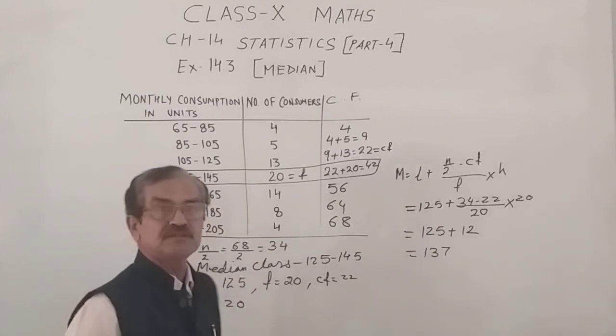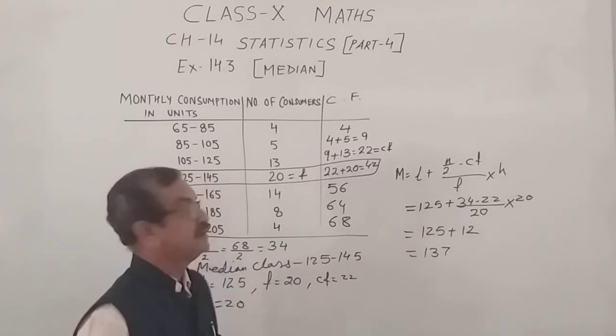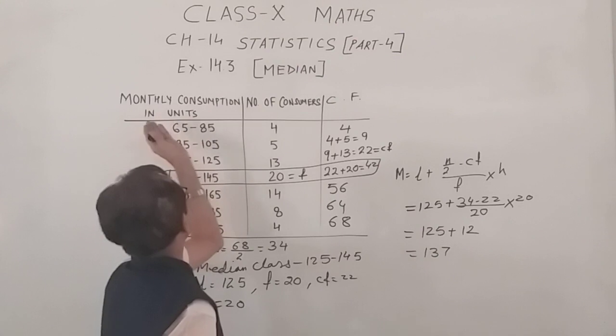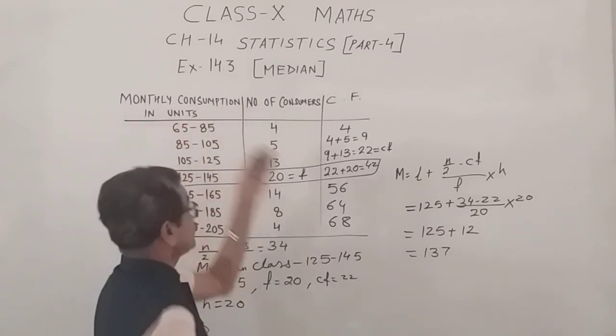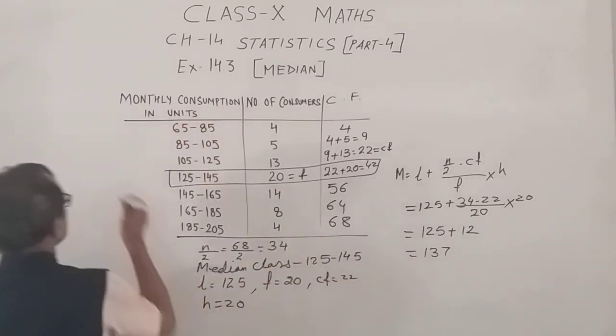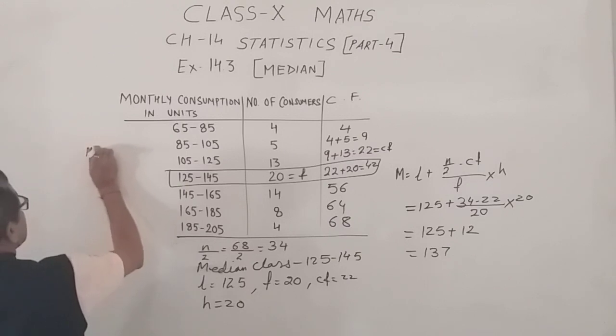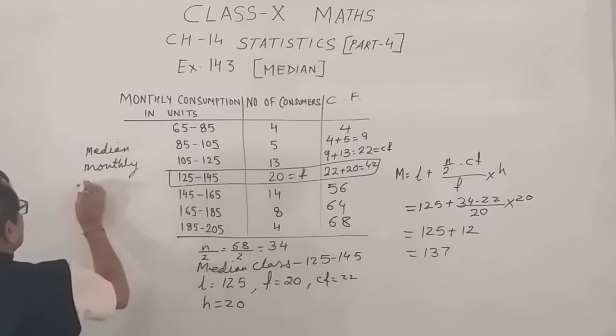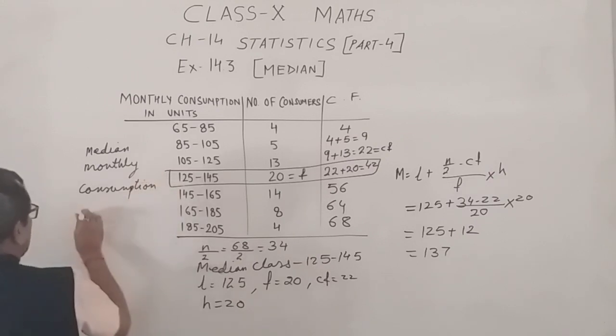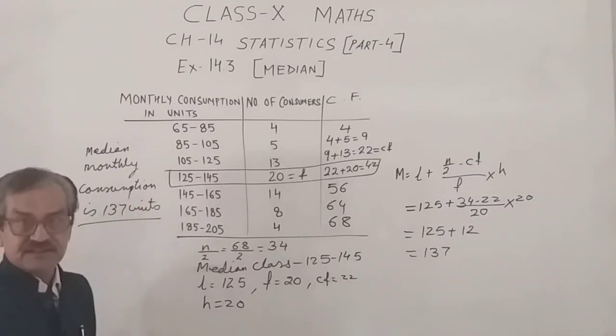in the end, we will always conclude the question with the statement. Now, the median monthly consumption is 137 units. That is your answer.